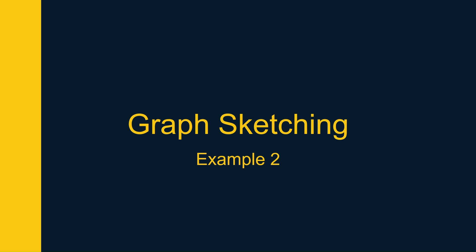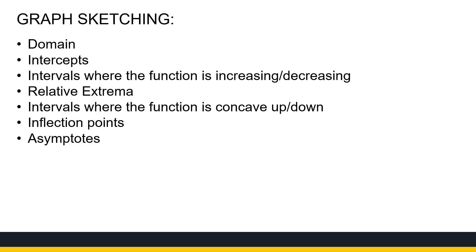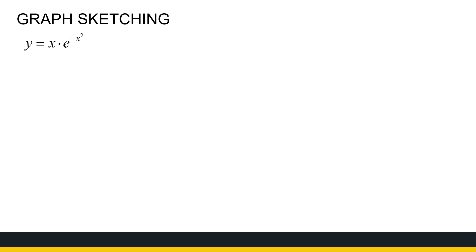We're busy looking at graph sketching. We've already done one example in the previous video. This example is a little bit different, but let's take a look. Just a reminder: what do we need when we want to sketch a graph? We need to look at the domain of the function, the intercepts, increasing, decreasing, relative extrema — which I get from the first derivative — concavity and inflection points from the second derivative, and asymptotes. So let's look at this function.